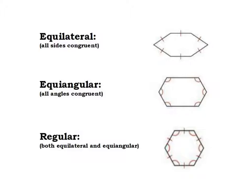A couple of terms we need to recognize as we move forward. Equilateral — we've used that word with triangles, but it works for all polygons. Equilateral just means all the sides are going to be the same. Here is an example of an equilateral hexagon — all 6 sides are the same length. Then we have equiangular, where all the angles are the same, but just because it's equiangular does not mean the sides have to be the same. If we can get a polygon that is both equiangular and equilateral, then we call it regular — that's what you're used to seeing, where everything matches up beautifully.